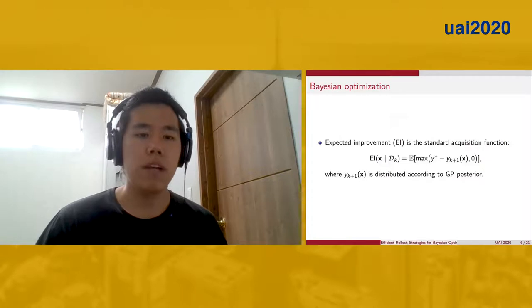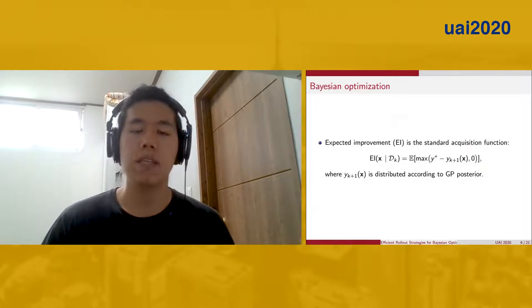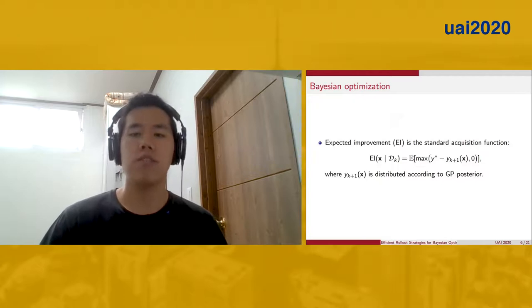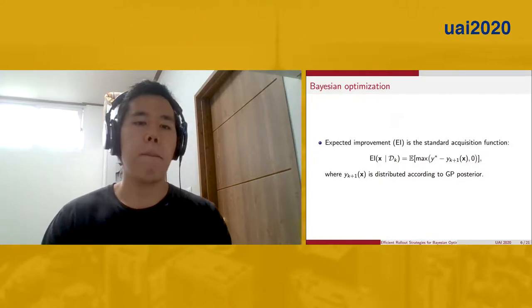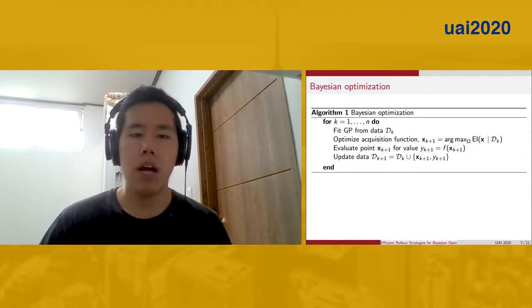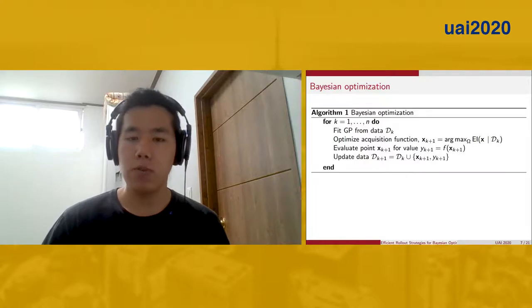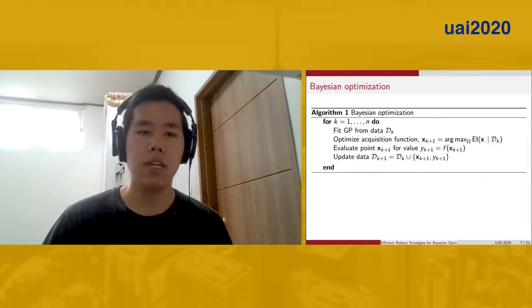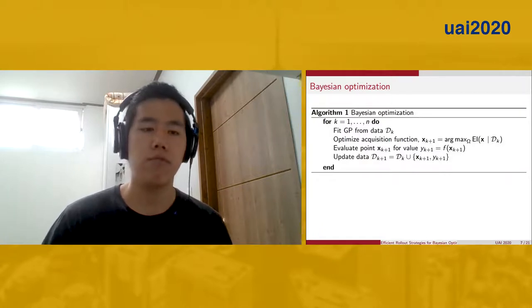To be more precise, we write expected improvement as the expected reduction in the objective according to the GP posterior. We can then write out the exact BO algorithm as you see here. Once again, the primary two steps involve a) building a model and b) maximizing an acquisition function, which we've written here as expected improvement.